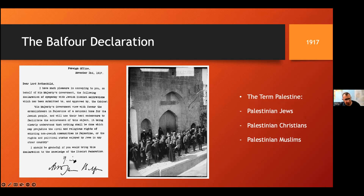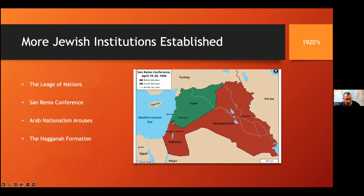No doubt the Balfour Declaration was the beginning of a tragic conflict between the Arabs and the Zionists that would last through our time, even until today, and likely into the future. The term 'Palestine' was the official historic name given to this land by the British — a geographical term applied to the people who lived here. There were Palestinian Jews, Palestinian Christians, and Palestinian Muslims, though the significant Palestinian Christian minority is often overlooked. During the British Mandate, the term 'Palestinian' was used to describe everyone residing in that land.